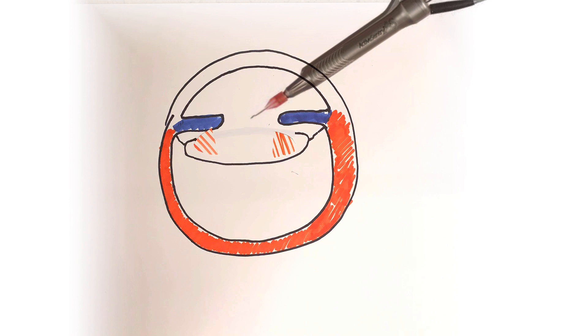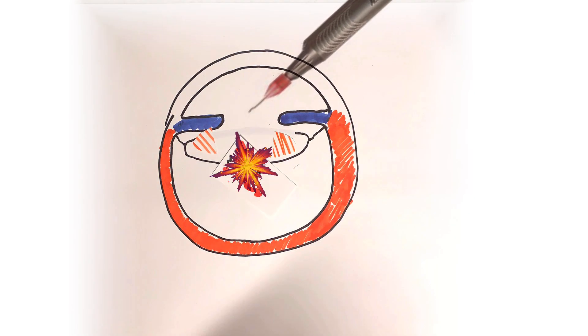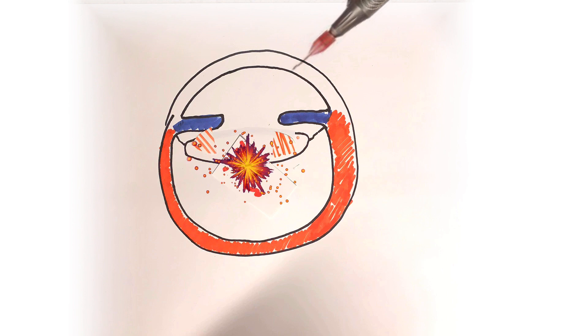However, if this capsule is weak or if it breaks during the cataract surgery, then there's no longer any barrier to separate the anterior and posterior segments of the eye. Here's the problem.